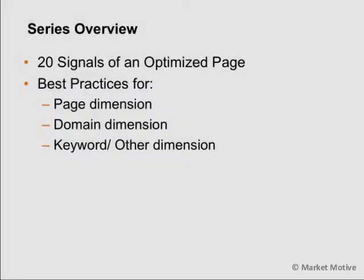In our entire series, we looked at many different things, including the 20 signals of an optimized web page. I encourage you to go back and review those now that you have a better understanding of the page dimension, domain dimension, keyword dimension, and other dimension factors associated with SEO fundamentals and best practices.